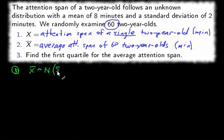And we then have a mean of eight equal to the mean of the underlying distribution, and a standard error, standard deviation of two divided by the square root of 60.